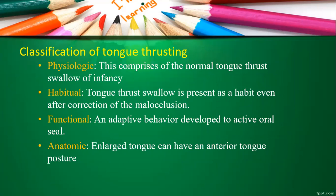Habitual tongue thrusting persists as a habit even after correction of the malocclusion. So even once the malocclusion is corrected, the tongue thrust still persists — that type we call habitual tongue thrust. Functional is an adaptive behavior developed to achieve oral seal, where the tongue position is functionally adapted to get a proper oral seal.